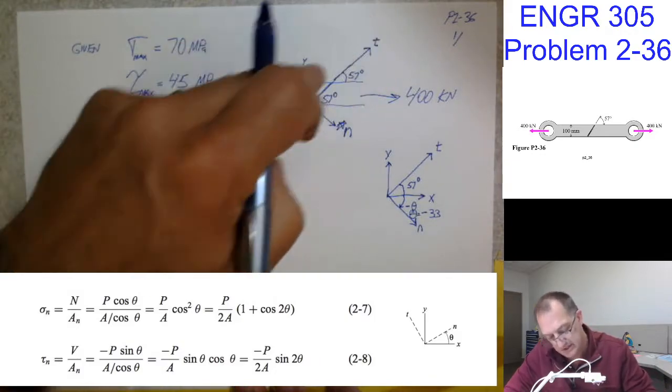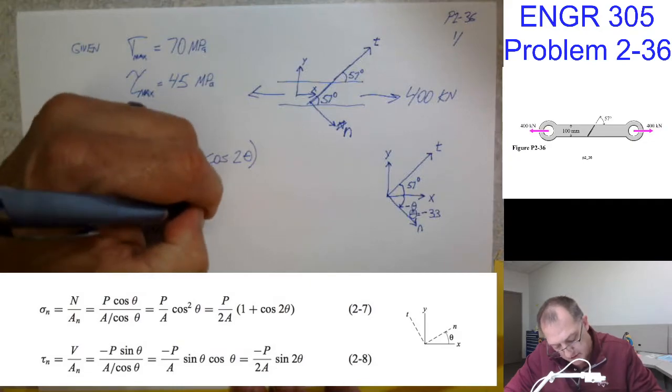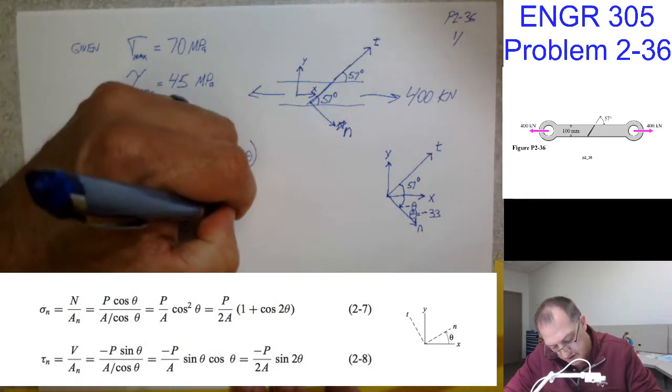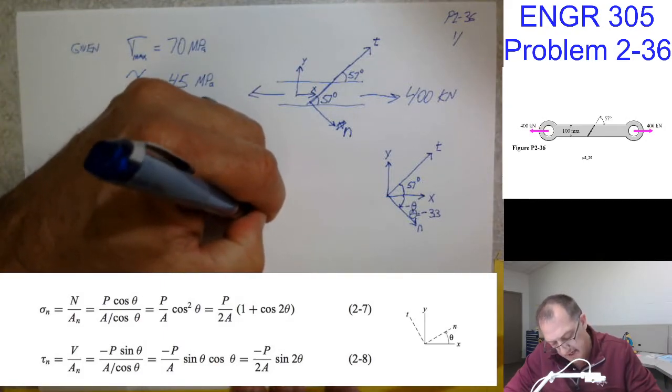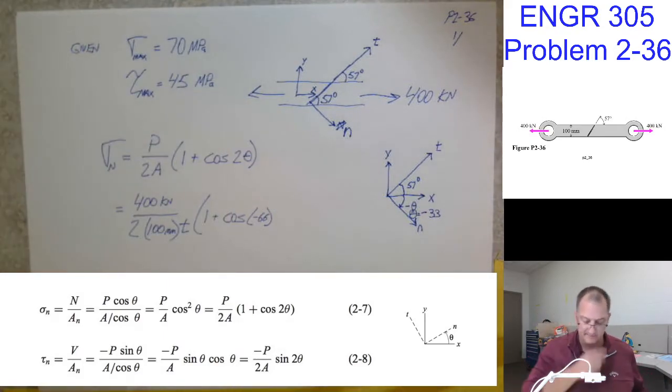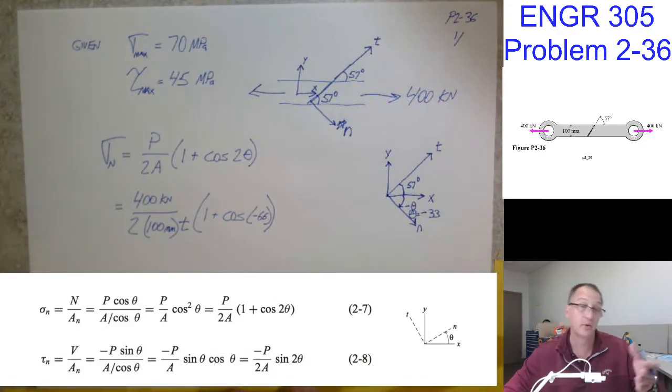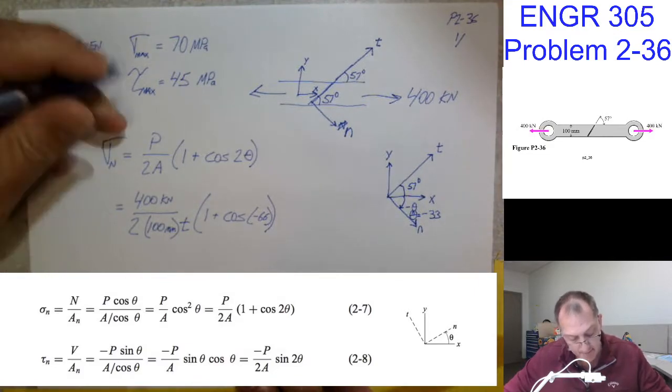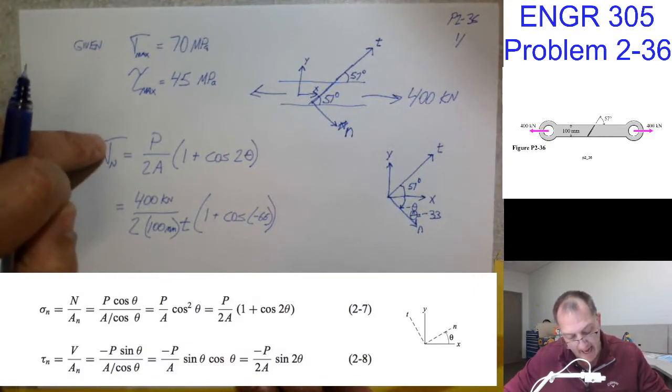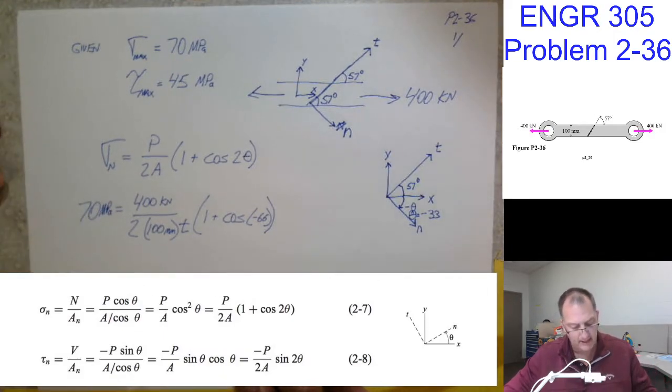So let's plug this in. P, my load, is 400 kilonewtons divided by twice the area. The area is the height times the depth or times the thickness. So that height is 100 millimeters, and then I've got a thickness t. Oh wait, tangential t. You got to keep these things straight. Times 1 plus cosine of negative 66 degrees.